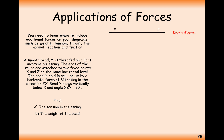The subtle difference in this question is that it is a smooth bead threaded on a light inextensible string — meaning it's one continuous piece of string that the bead is looped through. So the tension is the same on either side of that string. If the tensions were different, the bead would just slide to the left or right. Same string, same tension.